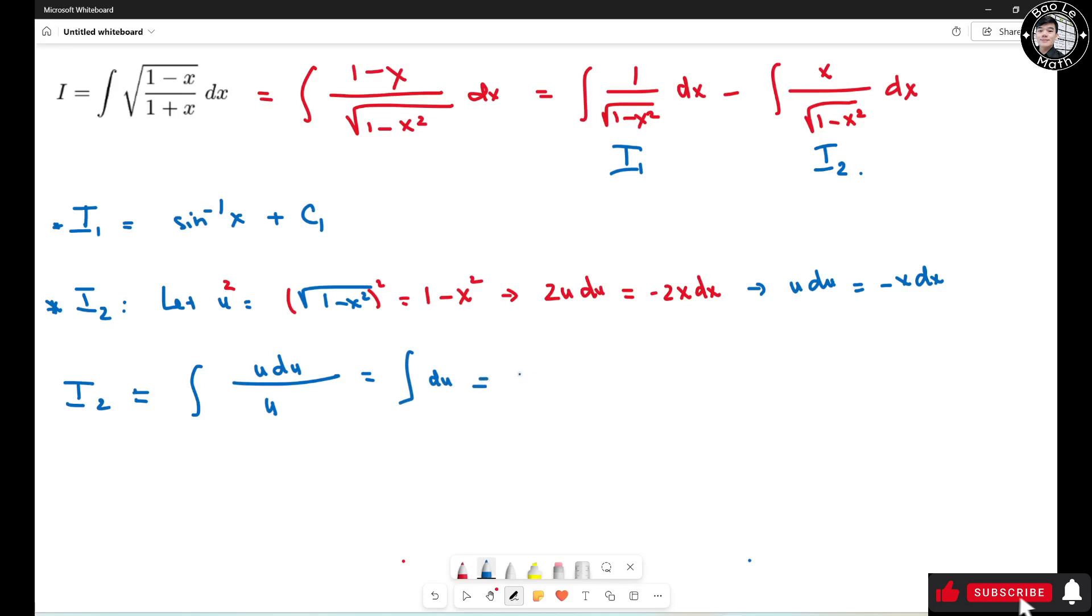Now it turns out to be u plus c2, but u equals this guy right here. So I just replace u with this guy. So it could be square root of 1 minus x square plus c2.